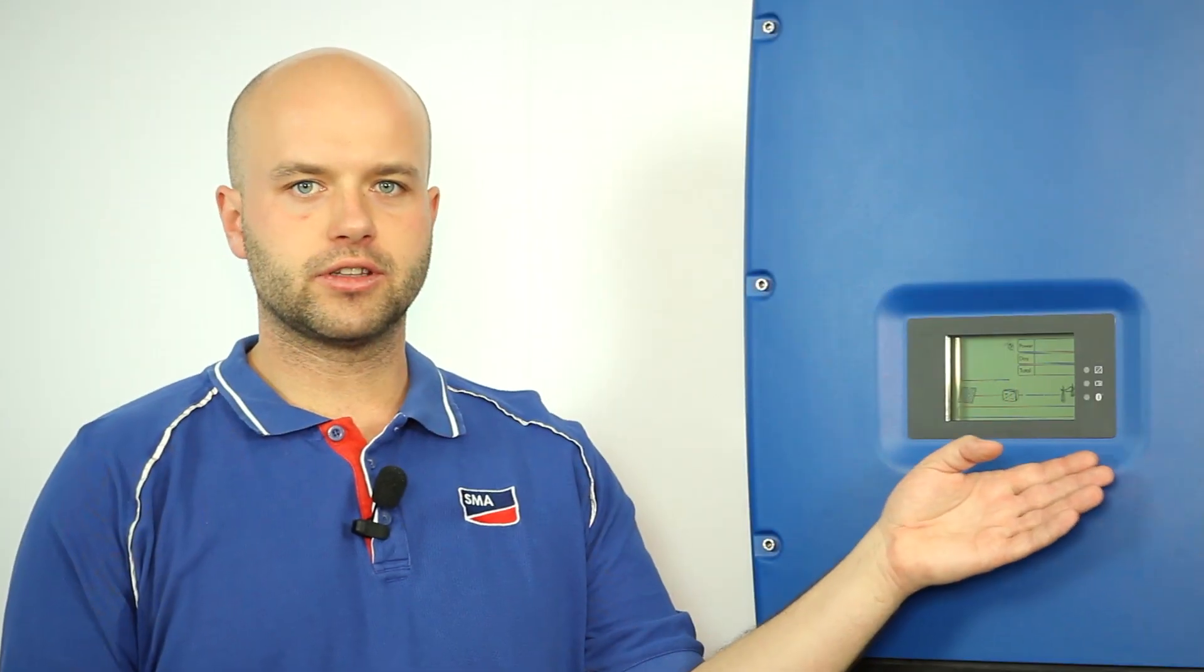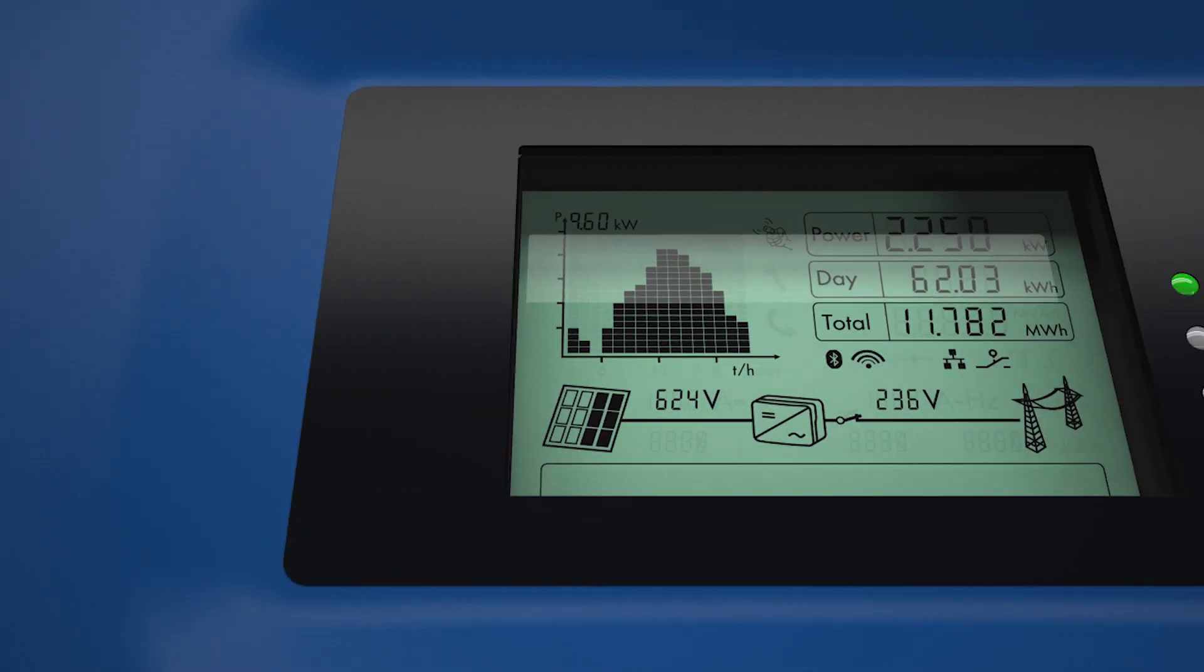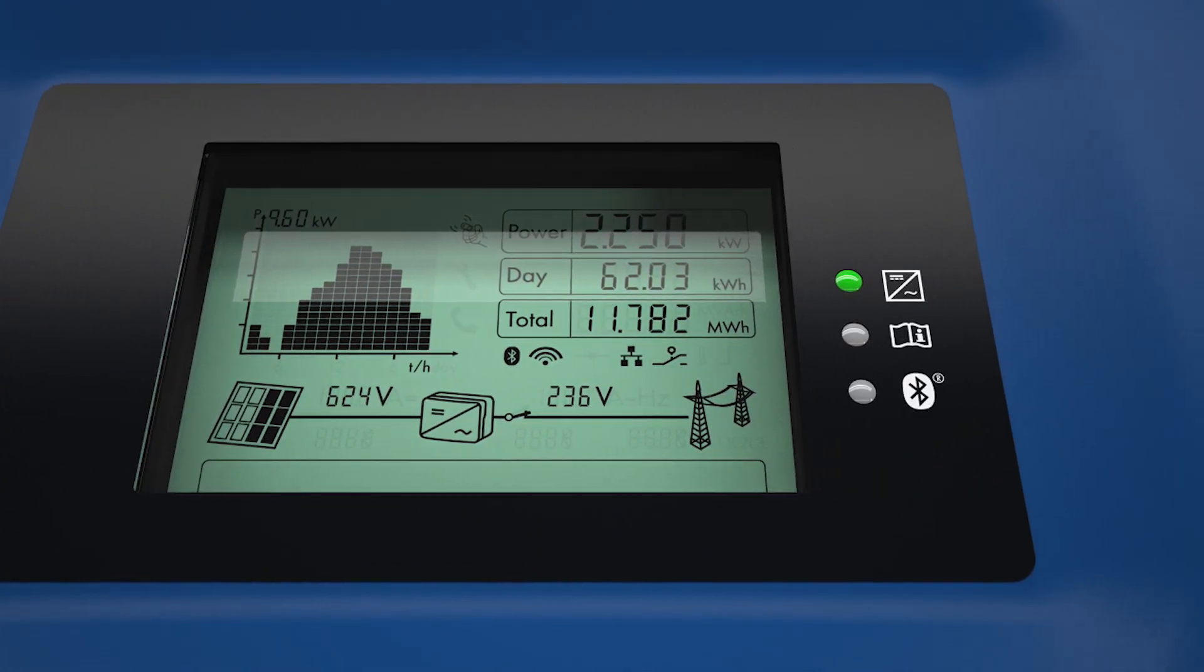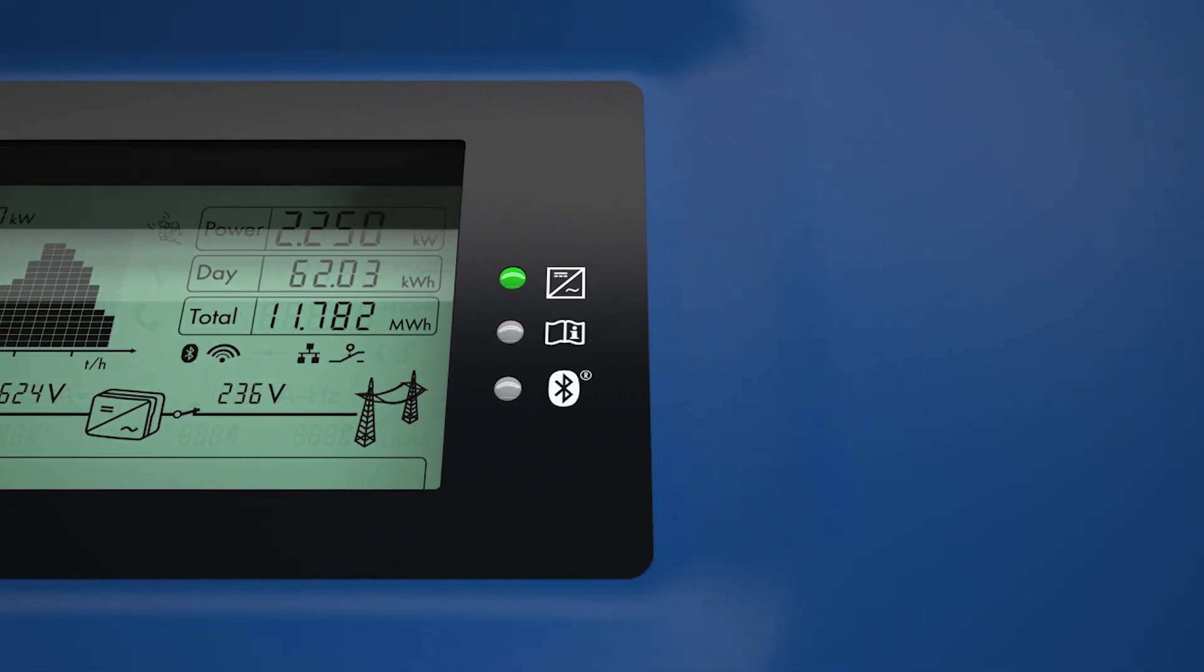The graphic display shows all the functions at a glance. For example, if WebConnect has established a communication to Sunny Portal or if it is communicating to Bluetooth.